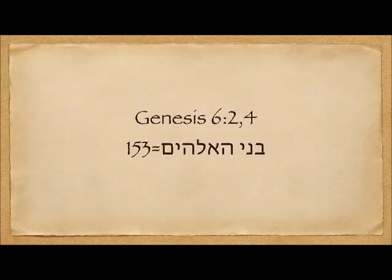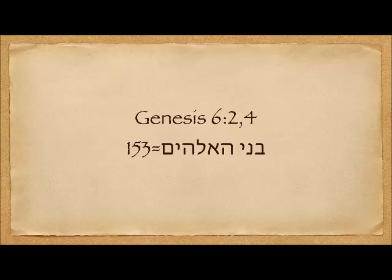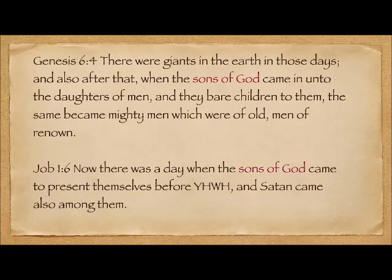Another connection people make, immediately before Parsha Noah, is the term Bnei HaElohim, which appears in Genesis 6:2 and 4, and has a gematria of 153. Some people have tried to attach this to the Bnei El-Chai in Hosea when the people are restored, but it's a bit of a stretch. In general, the Bnei HaElohim at the beginning are clearly supernatural beings, not human beings.